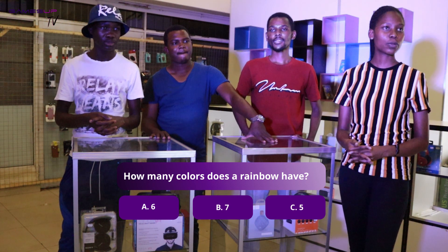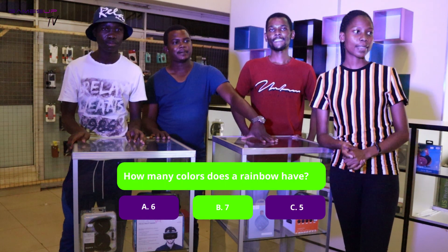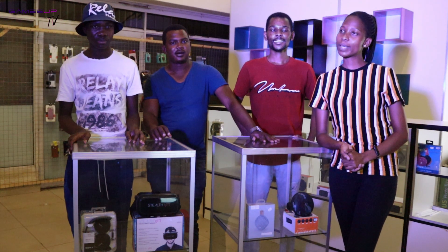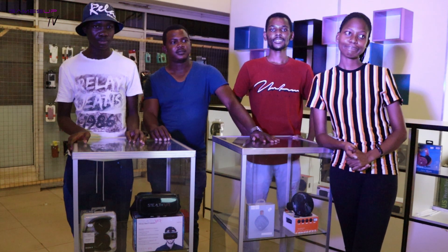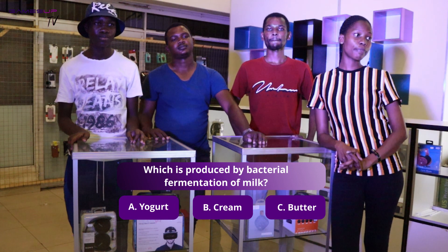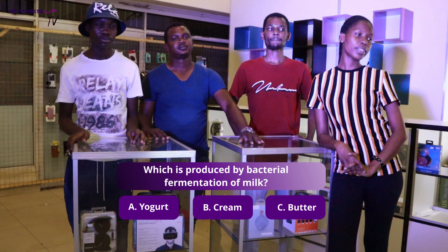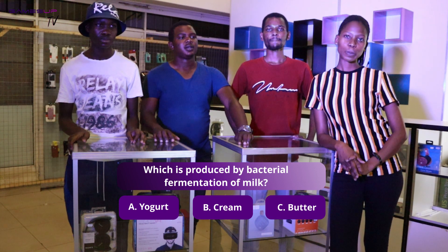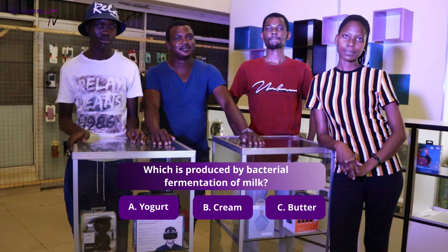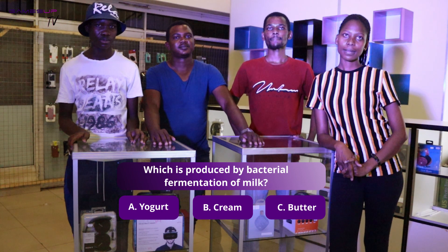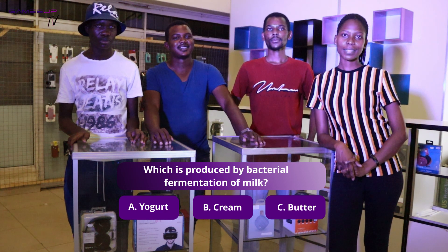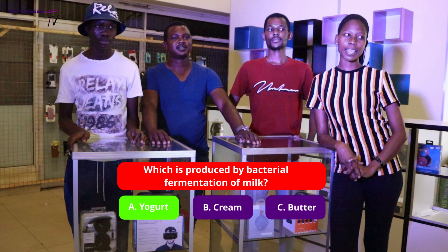Yes, the answer is confirmed. The next question is for you, Krispy: which is produced by bacterial fermentation of milk? A: yogurt, B: P, C: Bajit. Krispy thinks the answer is B. Let's see — the answer is A, yogurt.